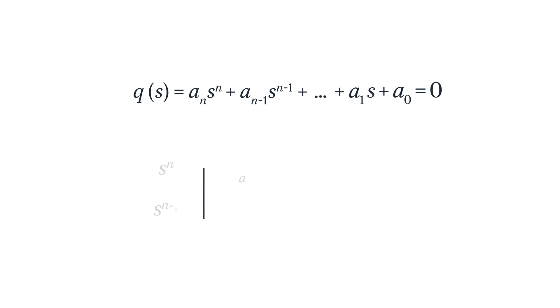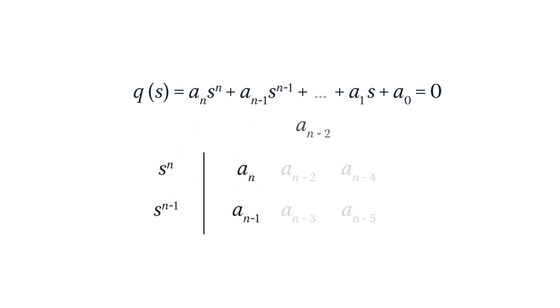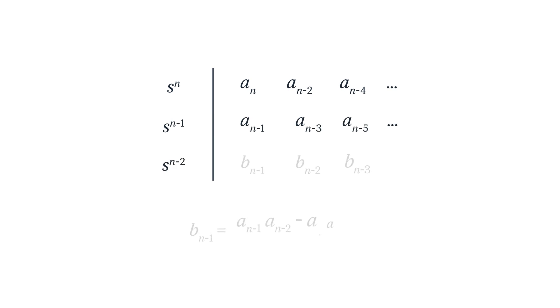We need to generate a Routh array. Let's use a standard characteristic equation. First, let's arrange the coefficients of this equation in an array. Starting with the first row, we are just writing the coefficients in the first and second rows of the array, alternating between the two rows. At this point it's just plugging the numbers in, so your only concern is making sure you're matching them correctly.